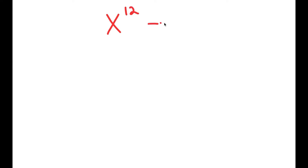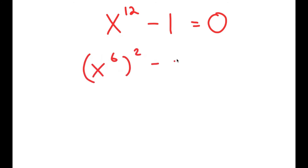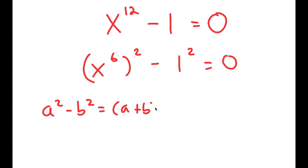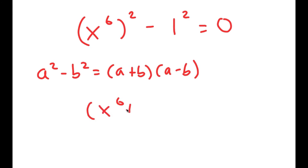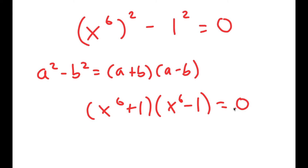In this video, I'm going to solve the equation x to the power of 12 minus 1 is equal to 0. To solve this, I'm going to first rewrite this as (x to the power of 6) squared minus 1 squared is equal to 0. The reason I'm doing this is so I can use the property a squared minus b squared is equal to (a plus b)(a minus b). So this turns into (x to the power of 6 plus 1)(x to the power of 6 minus 1) is equal to 0.